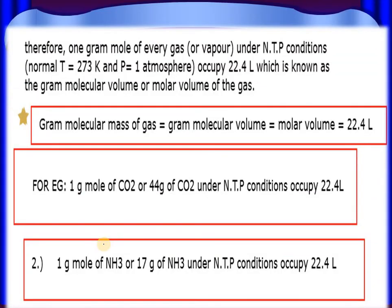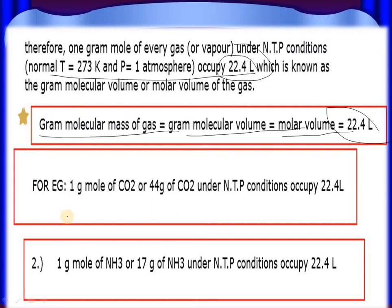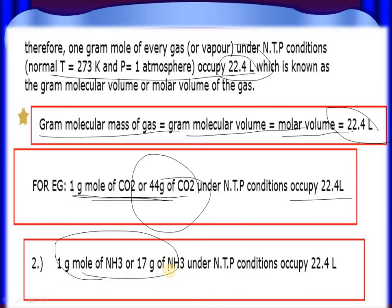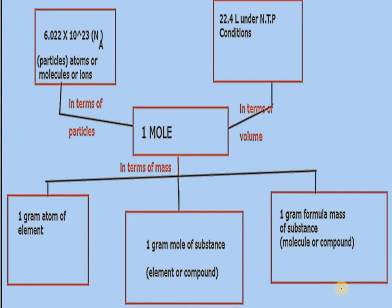Now if we want to relate volume in terms of moles, at NTP conditions the volume is 22.4 litres per mole. For example, 1 gram mole of carbon dioxide is 44 grams and occupies 22.4 L at NTP. Similarly, for ammonia: 1 mole is 17 grams and occupies 22.4 L. So to summarize, we have now studied how 1 mole is related in terms of mass, in terms of particles, and in terms of volume.